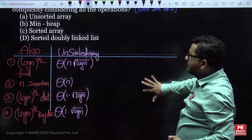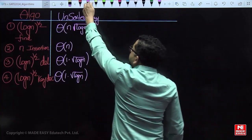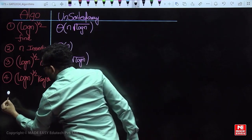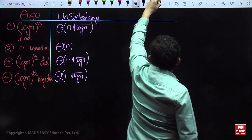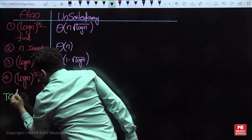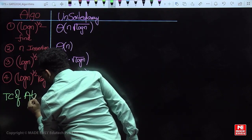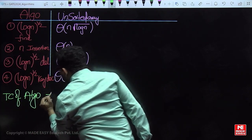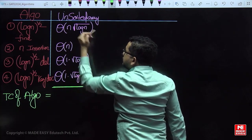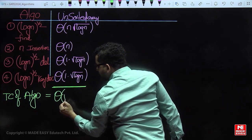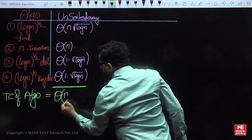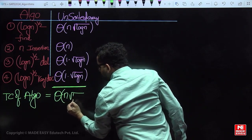So if you use the unsorted array, the overall time complexity of the algorithm is Θ(n·√(log n)), since the leading term is n multiplied with square root of log n.